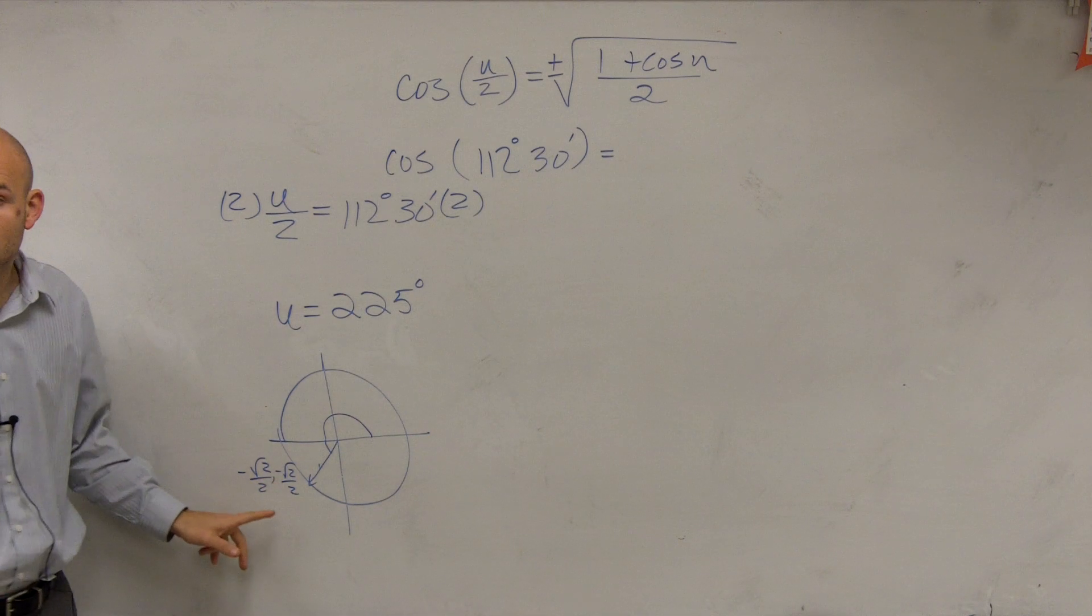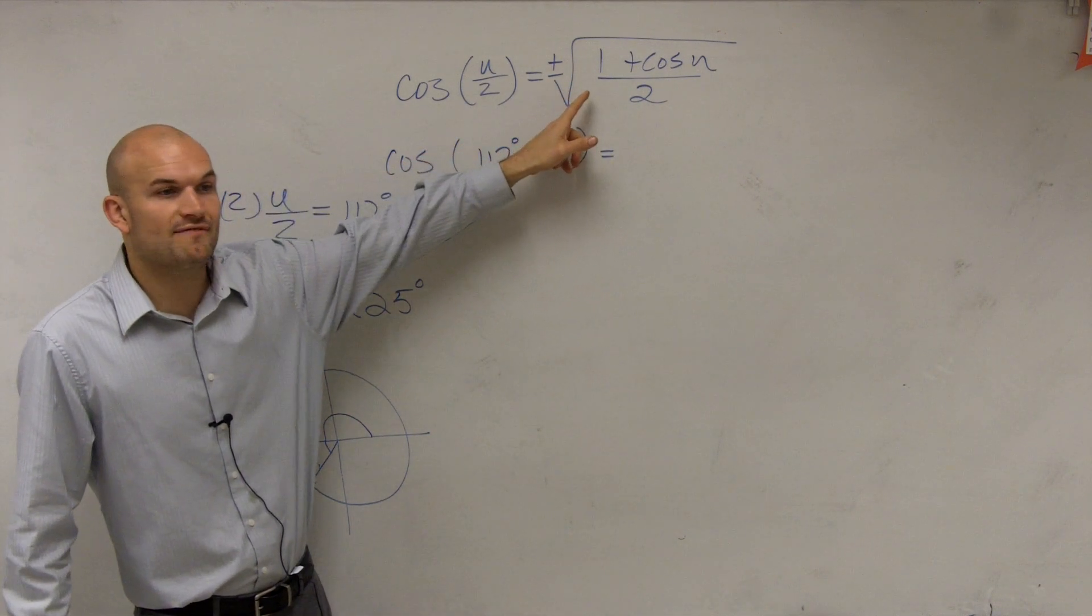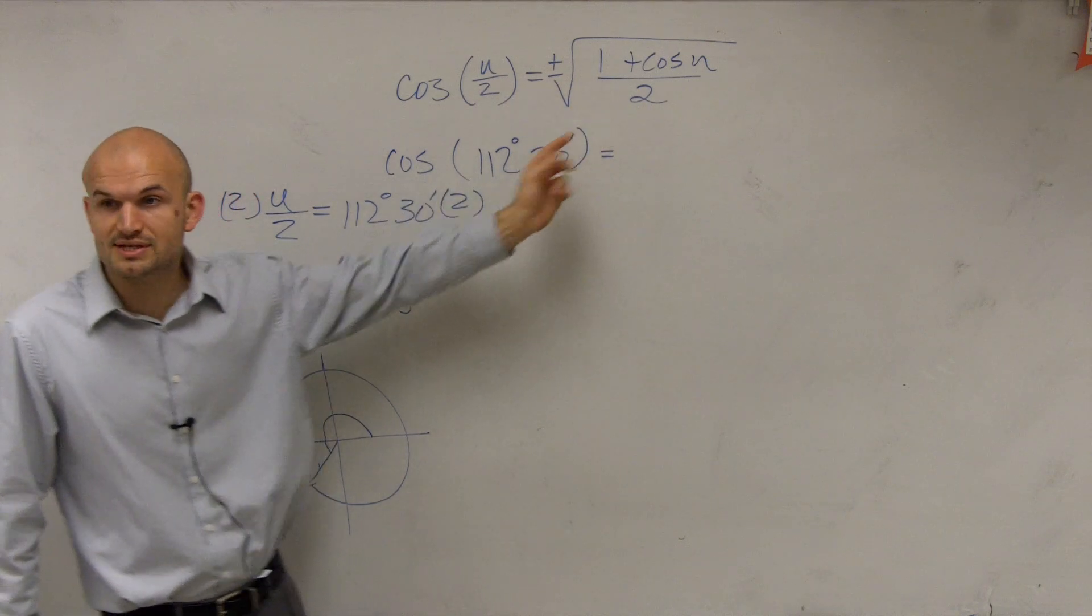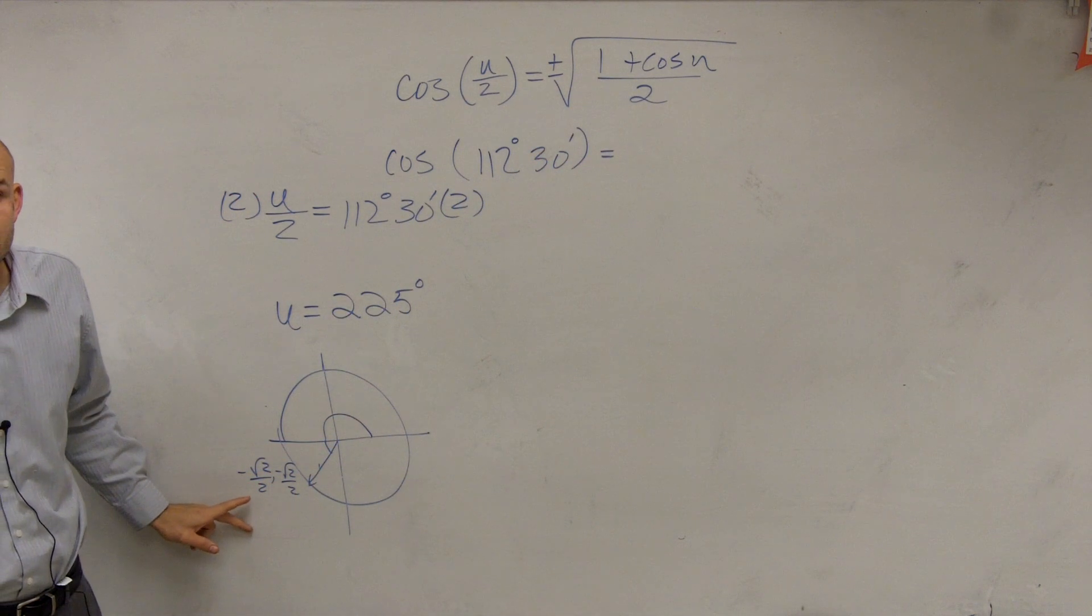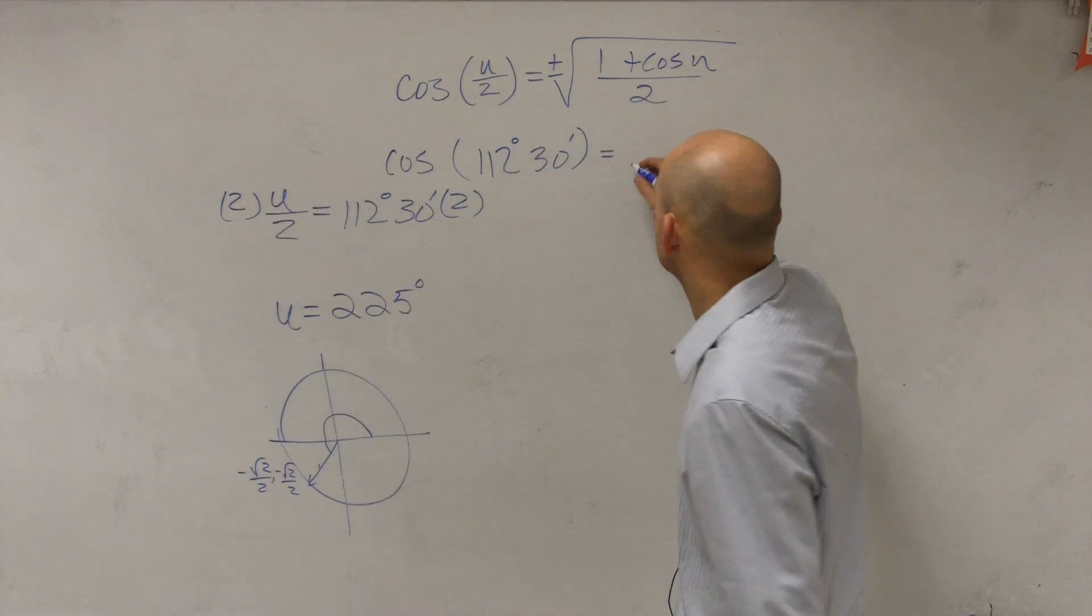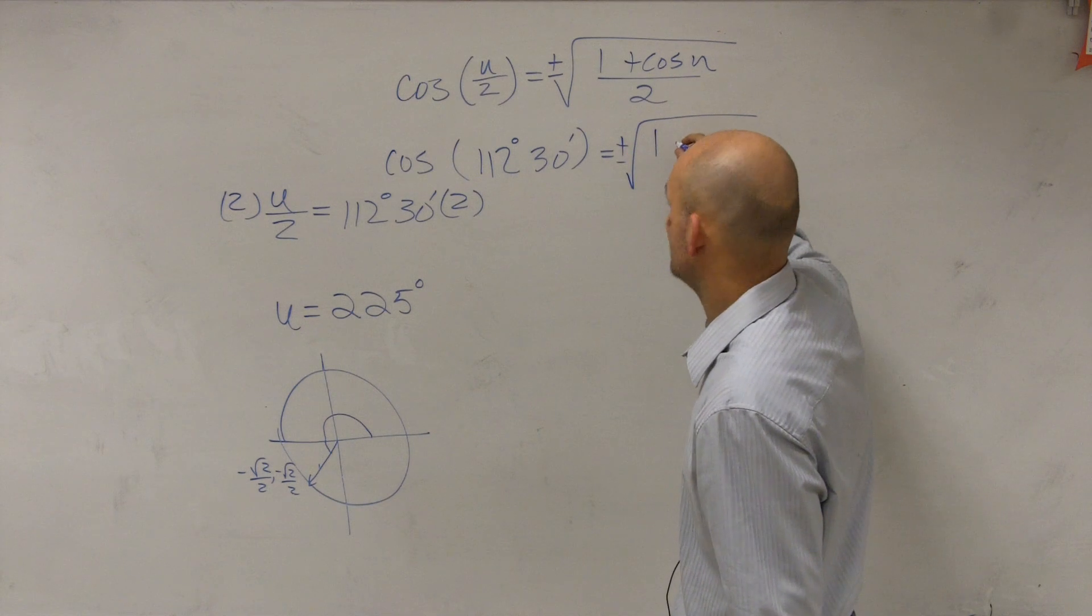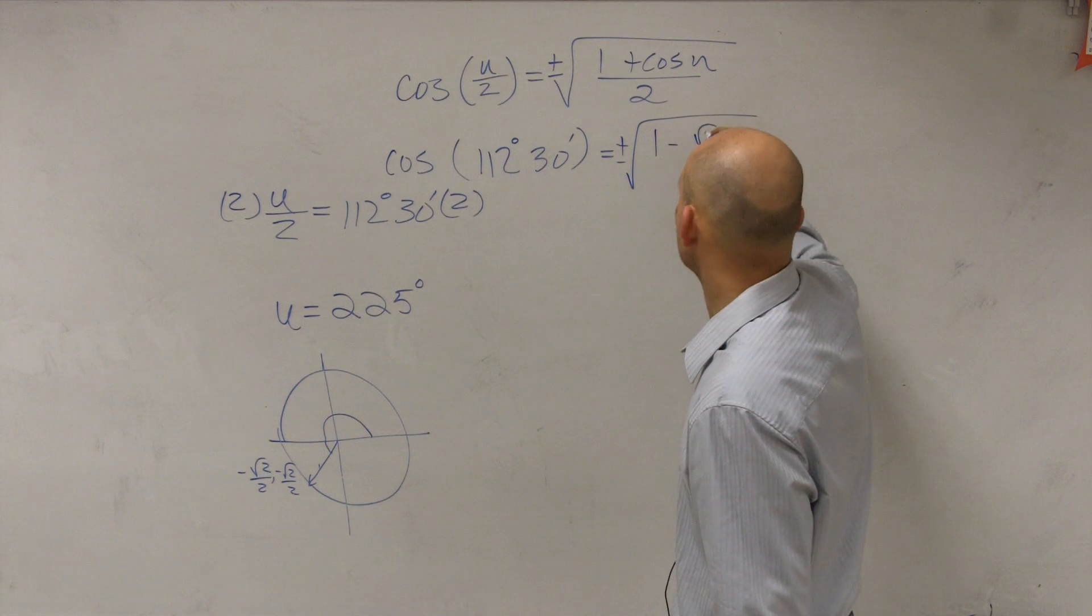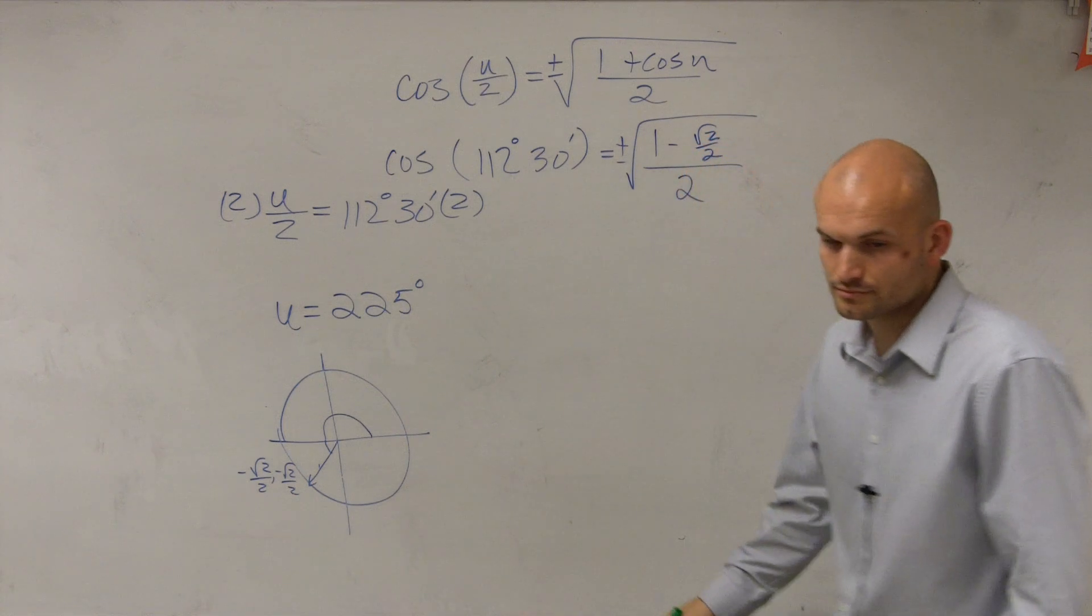So therefore, my u, we need to evaluate by looking at the half angle formula. We need to evaluate for the cosine of that value, which is going to be dealing with a negative square root of 2 over 2. Make sense? OK. So let's plug this in. We have plus or minus 1 minus square root of 2 over 2 divided by 2. All right?